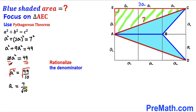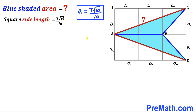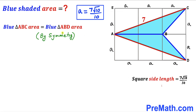Taking the square root of both sides, side length a = 7 divided by the square root of 10. To rationalize the denominator, we multiply numerator and denominator by √10. Since √10 × √10 = 10, our side length a turns out to be 7√10 divided by 10. So the side length of each square is 7√10 / 10.